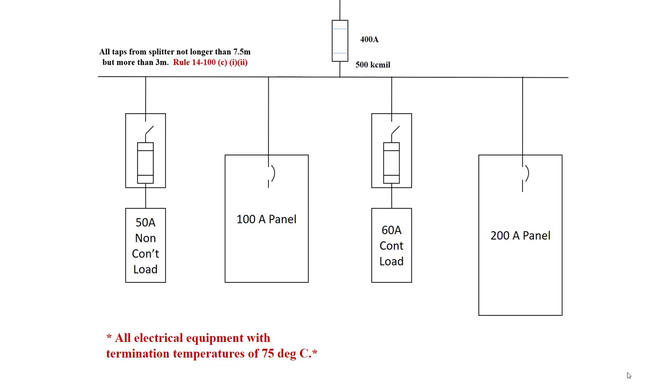Let's read through rule 14-100C and items 1 and 2. It says where the smaller conductor has an ampacity not less than one-third of the larger conductor from which it is supplied. We're dealing with this tap conductor right here that goes to our first fusible disconnect.